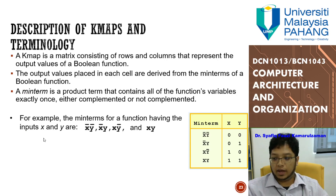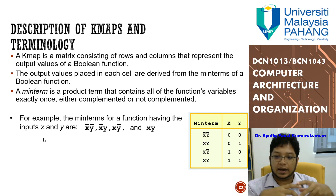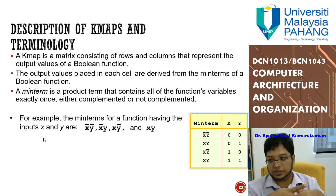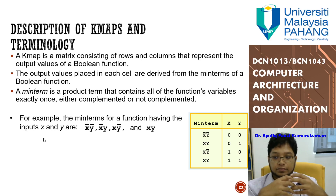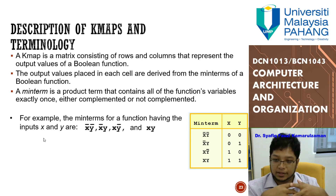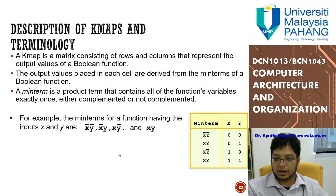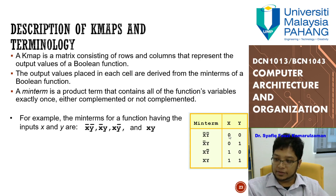A K-map is basically a matrix of rows and columns that represents the output values of a Boolean function. The output values placed in each cell are derived from the minterms of a Boolean function. A minterm is a product term that contains all the function variables exactly once, either complemented or uncomplemented. For example, input 00 gives minterm x̄ȳ, 01 gives x̄y, 10 gives xȳ, and 11 gives xy.